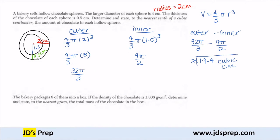So that's the amount of chocolate that's in the hollow sphere. The second question is the bakery packages 8 of them in a box. If the density of the chocolate is 1.308 grams per cubic centimeter, determine to the nearest gram the total mass of the chocolate in the box.